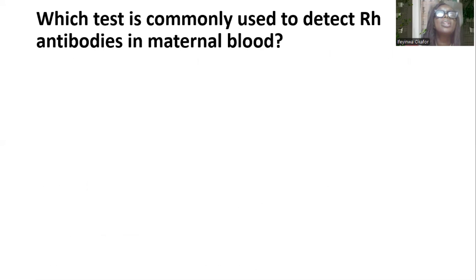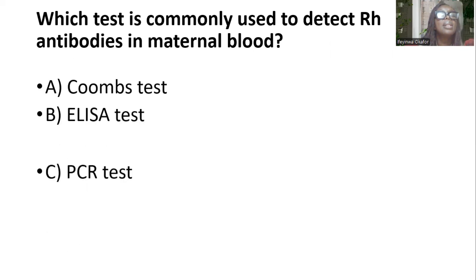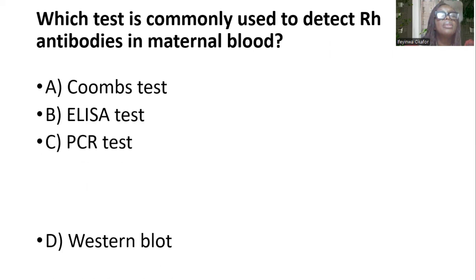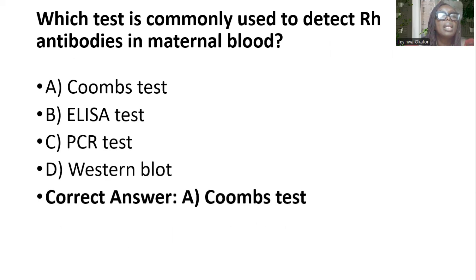Which test is commonly used to detect RH antibodies in maternal blood? Options are Coombs test, ELISA test, PCR, and Western blot. And the answer is A — the Coombs test.